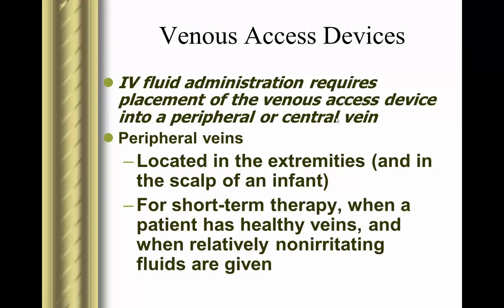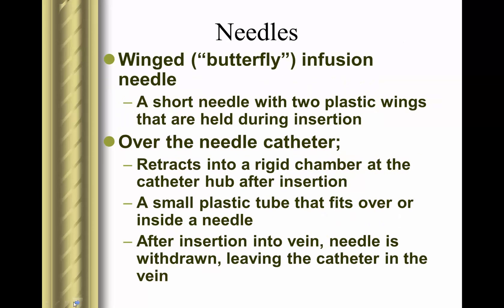When fluid requires placement of a venous access device into a peripheral vein, we can locate them on the extremities. They're generally used for short-term therapy when patients have healthy veins and when relatively non-irritating fluids are given. Wing-tipped devices have a short needle with two plastic wings held during insertion. The over-the-needle catheter retracts into a rigid chamber at the catheter hub after insertion; the needle is withdrawn after insertion, leaving the plastic catheter in the vein.